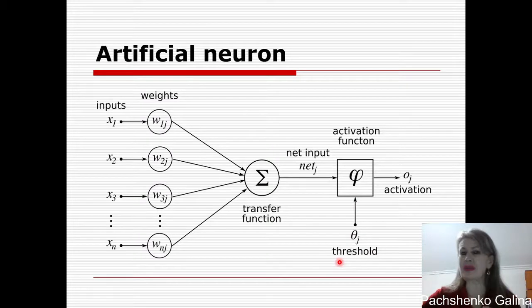The input of the threshold or bias is always equal to 1 and it has its own weight. And here we have output of the neuron.